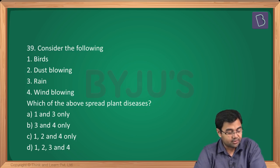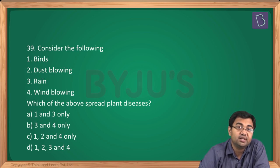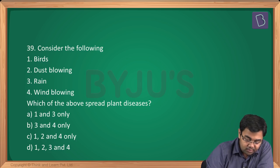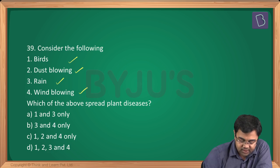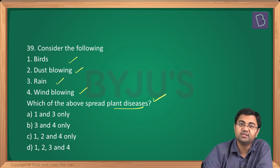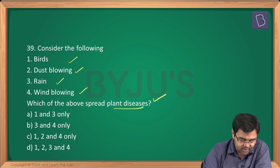Question number 39: which of the following — dust blowing, rain, wind blowing — spread plant diseases? All of them can become carriers of plant disease, so the answer includes all options.